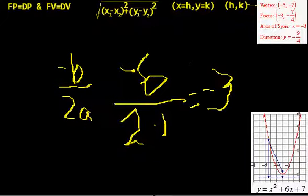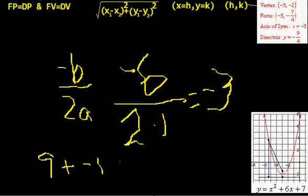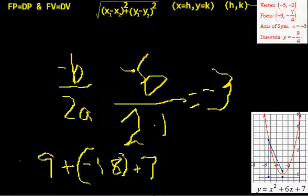Then you plug the axis of symmetry back into the function, so you have minus 3 squared, which gives you 9. This 6 times minus 3 is minus 18, and then you add 7.